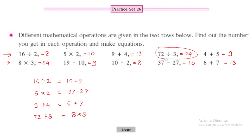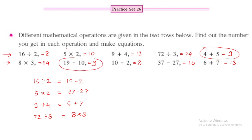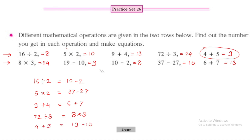The final equation: 4 plus 5 is 9, and 19 minus 10 is also 9, so 4 plus 5 is equal to 19 minus 10. This completes all the equations formed from the two rows of operations.